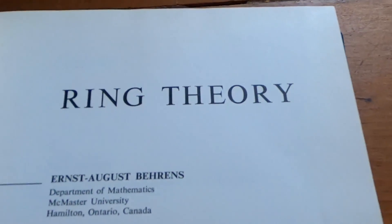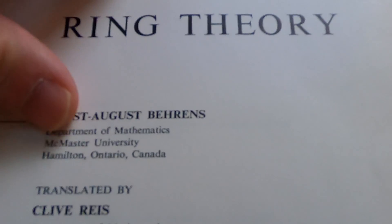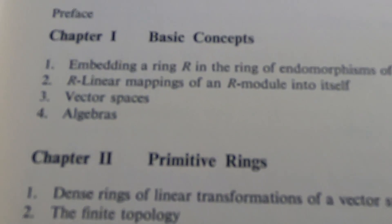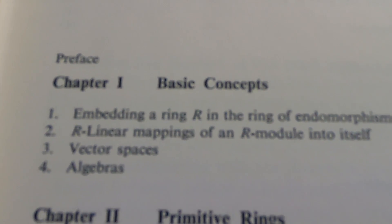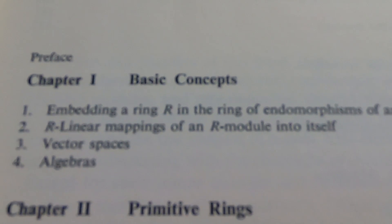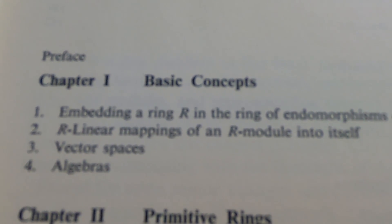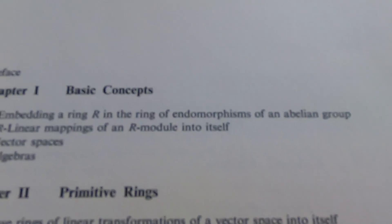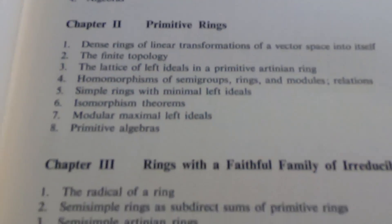This is another ring theory book, but it does not start as gently as the McCoy one — it's pretty hardcore and certainly not a beginner book. It's called Ring Theory by Burns. Looking at the table of contents, it starts with basic concepts and goes right into primitive rings. Chapter one covers vector spaces and algebras; the very first section is embedding a ring R in the ring of endomorphisms of an abelian group. The language may not be familiar, so it's definitely not for beginners.